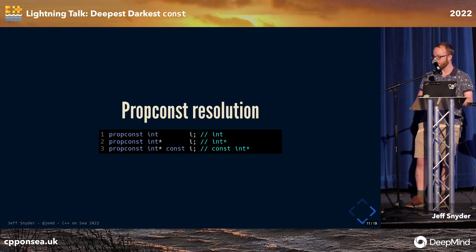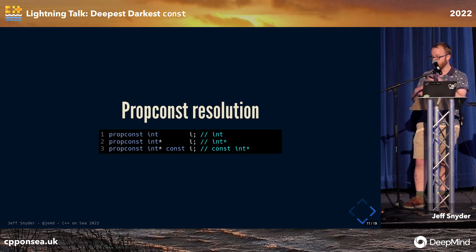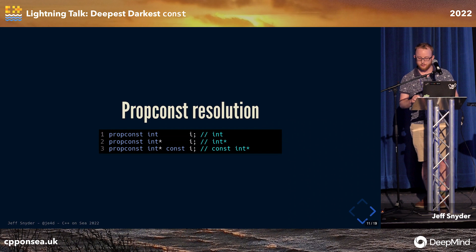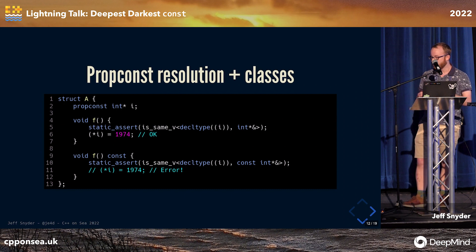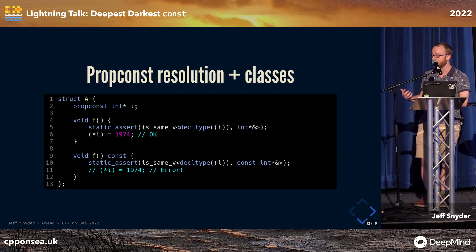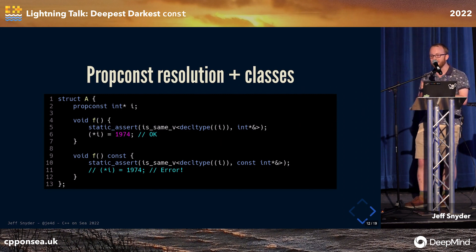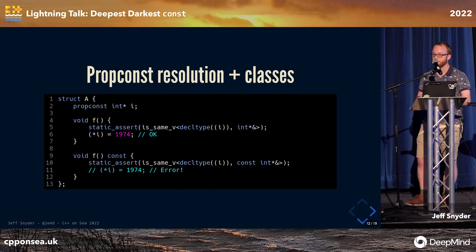There are a couple of examples. If you just write prop const int, it's kind of useless — that's just an int. If you write prop const int star, the prop const goes away because the pointer is mutable. If you write prop const int star const, making the pointer const, then that's effectively the same as a const int pointer. The magic comes when you use one of these things in a class, because in different contexts — by which I mean in a const versus non-const member function — that pointer is either mutable or non-mutable. The fact that you've used prop const on the pointee type then makes it actually propagate const, just as std::propagate_const would.